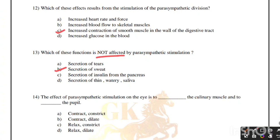The effect of parasympathetic stimulation on the eye is to contract the ciliary muscle and to constrict the pupil. Option A, contract and constrict the pupil.